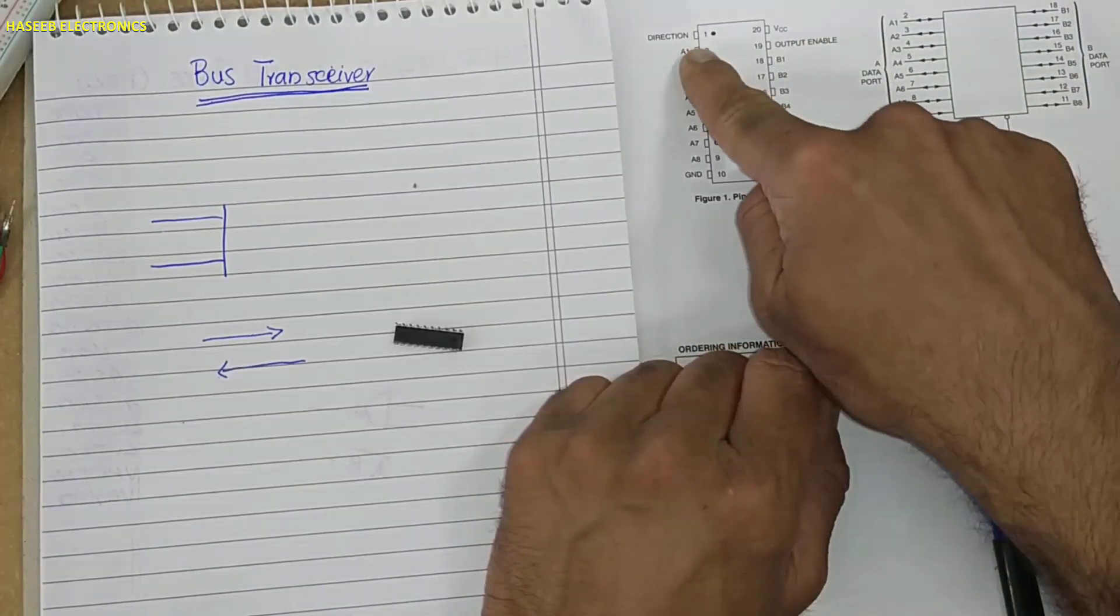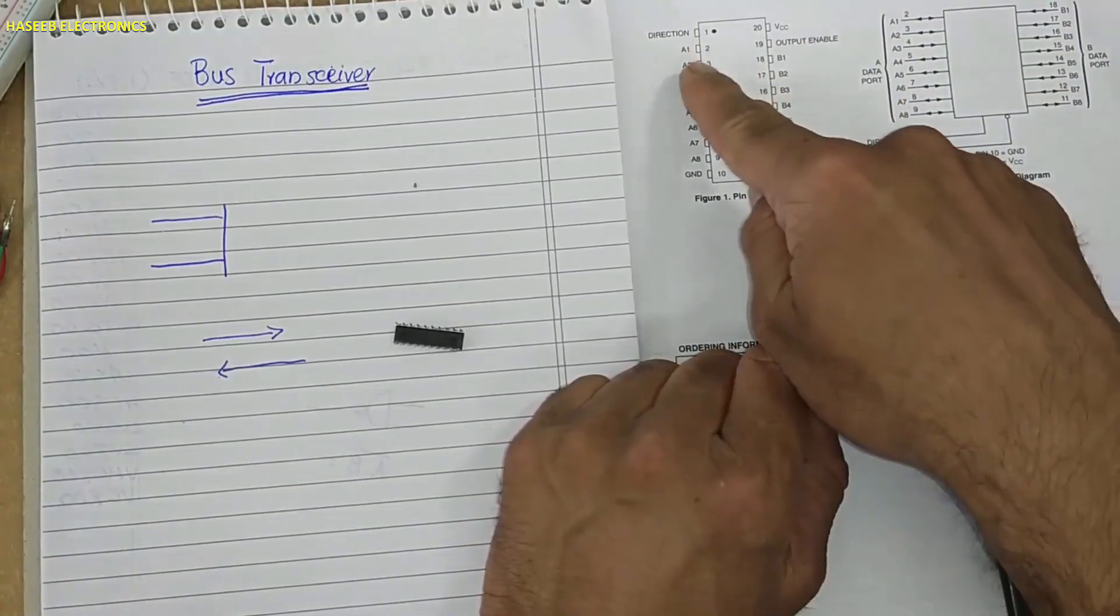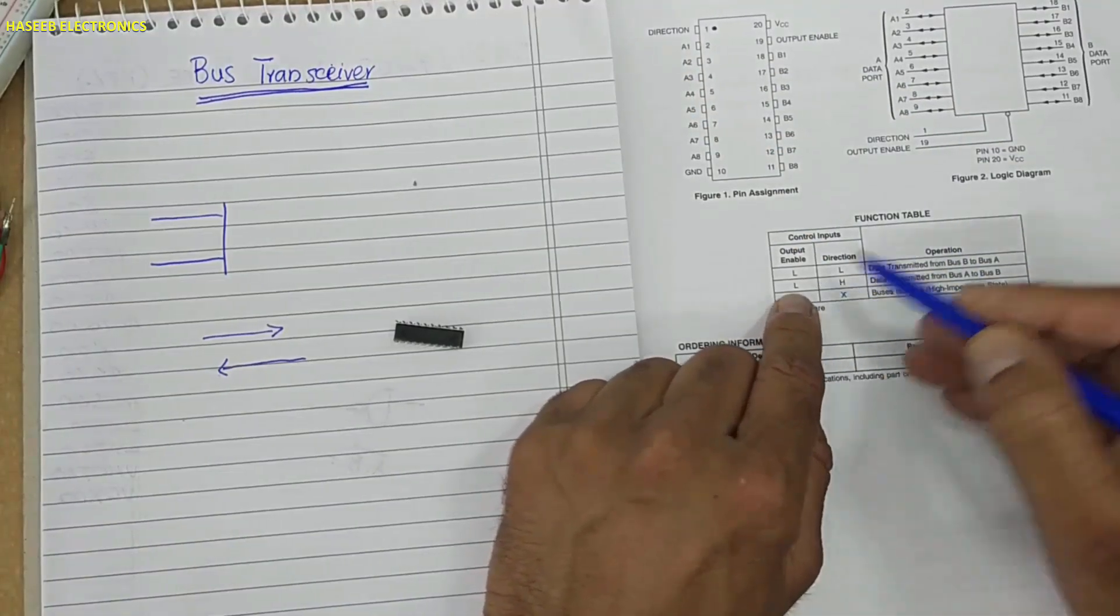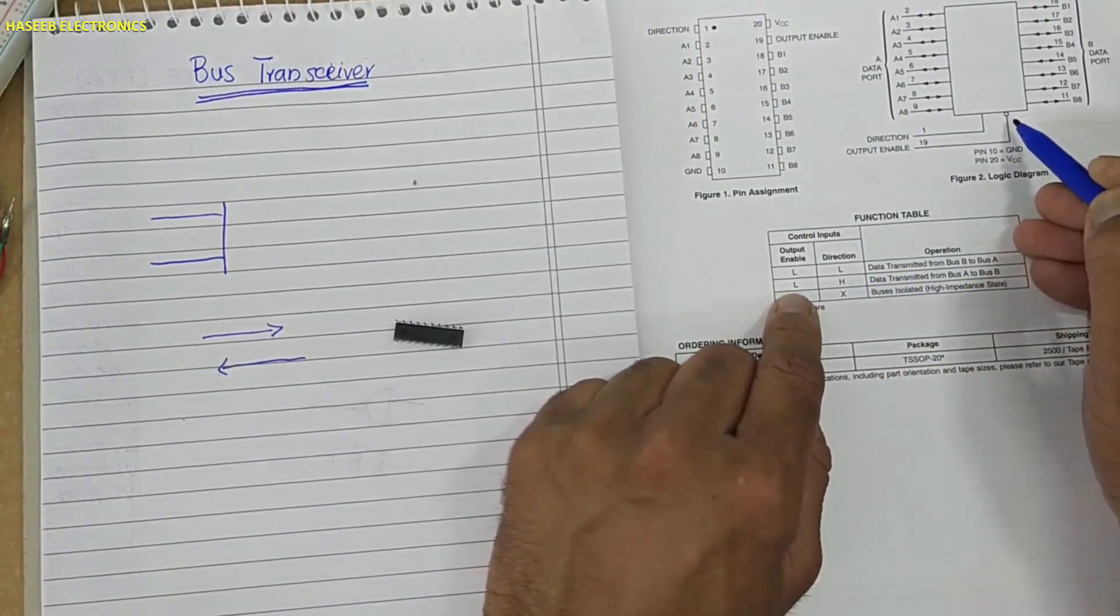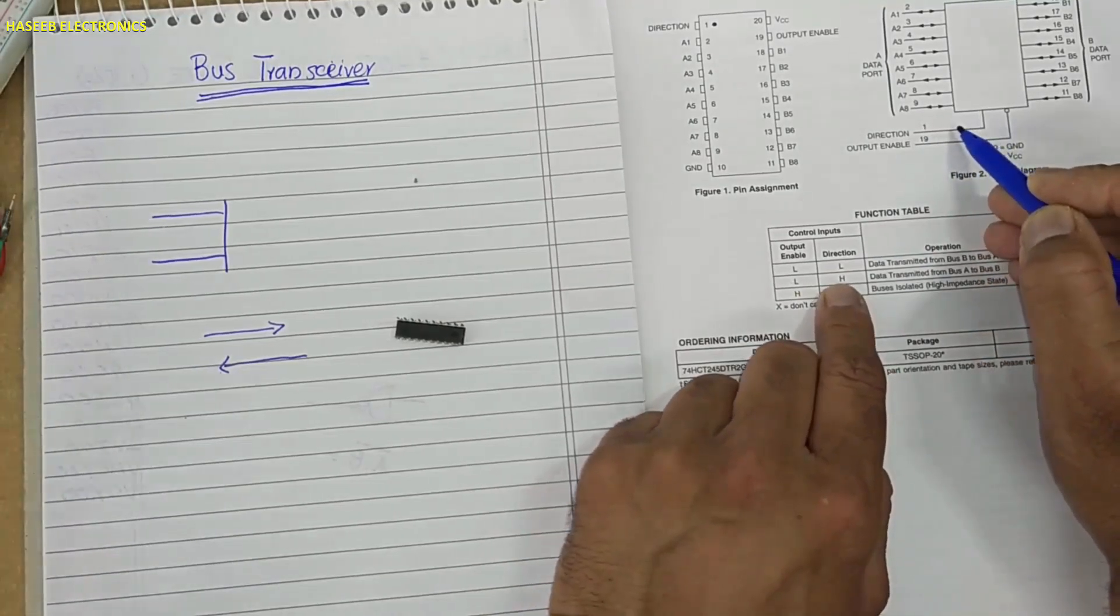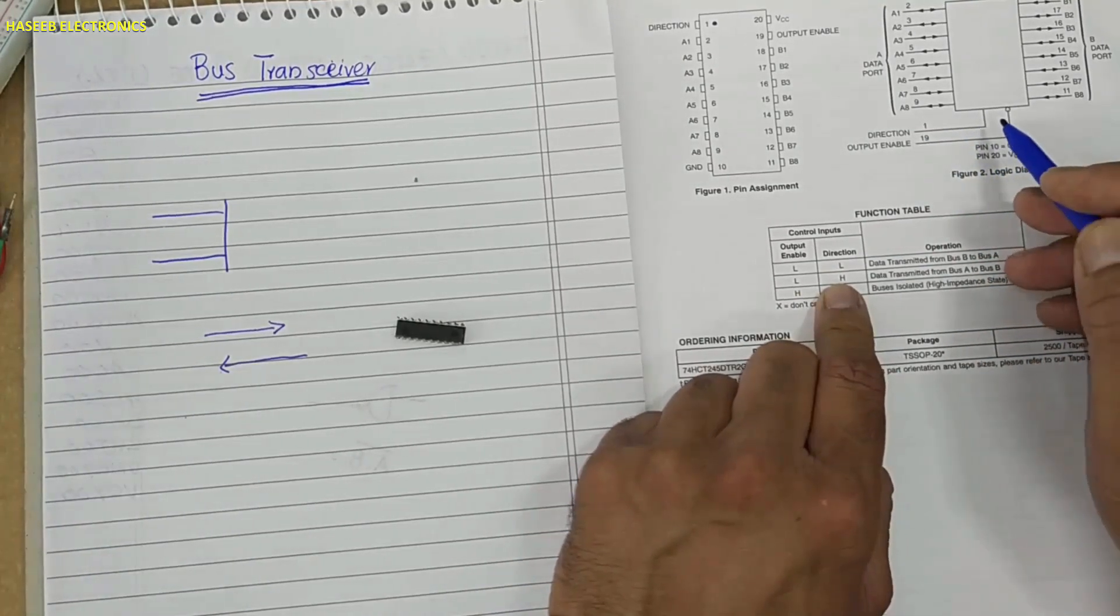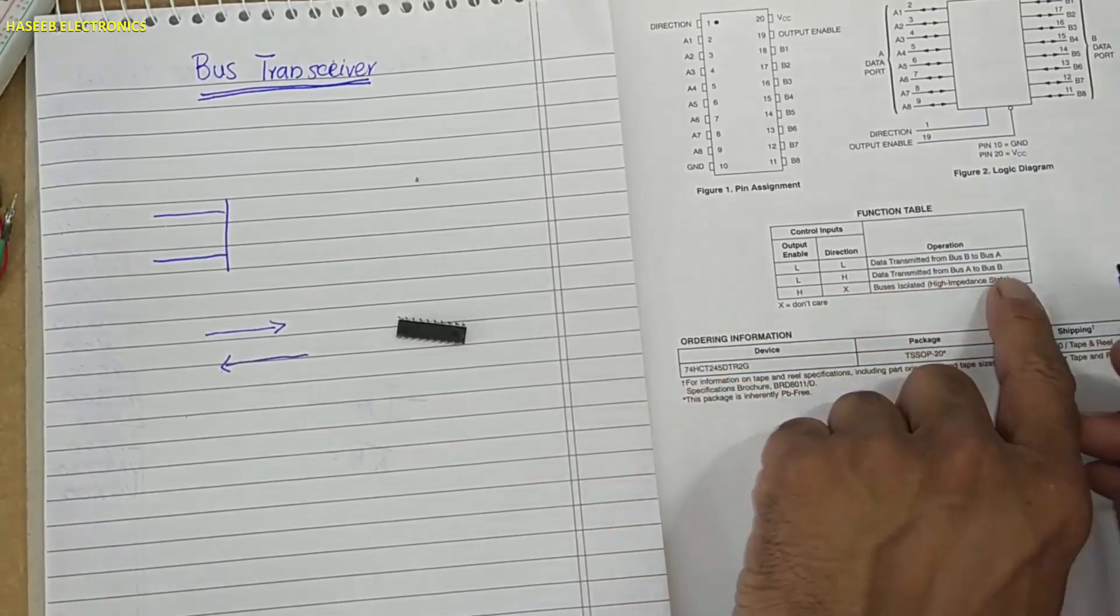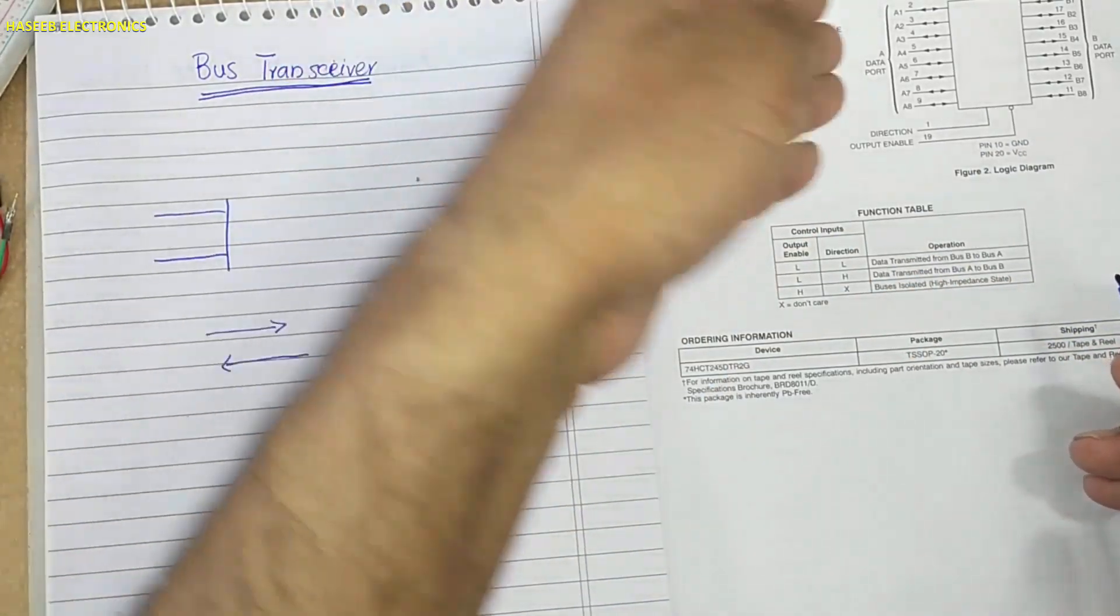And if output enable pin is low, pin 1 direction is high, 5 volt applied here, at that time it will transmit data from bus A to bus B, from A side to B side.